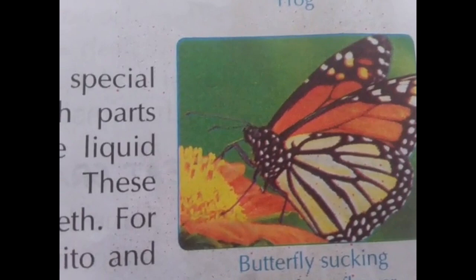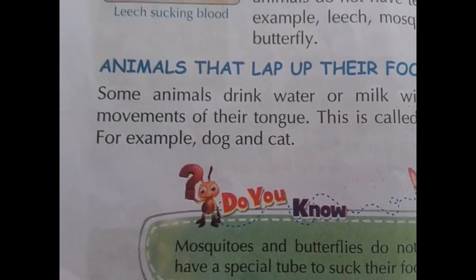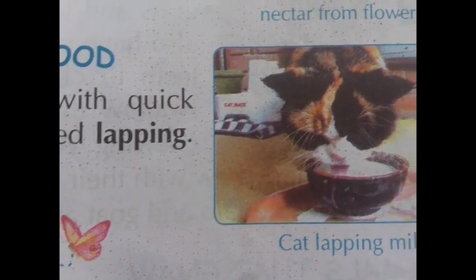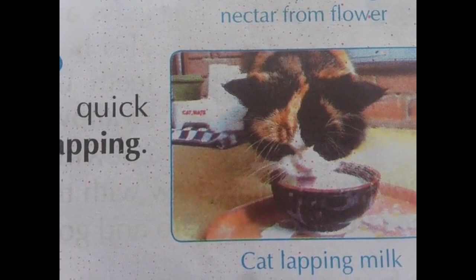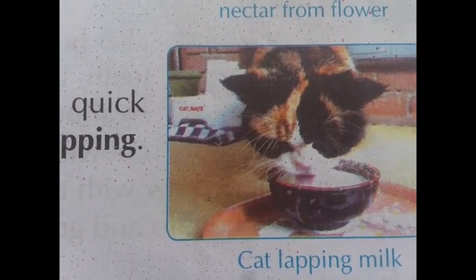Animals that lap up their food: some animals drink water or milk with quick movements of their tongue. This is called lapping. For example, see the picture of a cat lapping milk — it takes the milk with the help of its tongue. Examples are dog and cat.